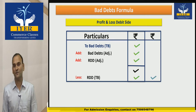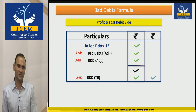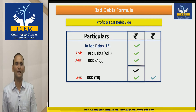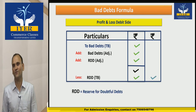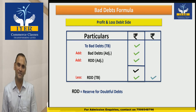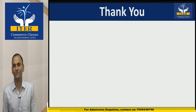Once again, the formula of bad debts: Bad Debts as per Trial Balance, add Bad Debts as per adjustment, add RDD as per adjustment, and less RDD as per Trial Balance. The full form of RDD is Reserve for Doubtful Debts. We will meet again with more chapters of FIJC. Thank you.